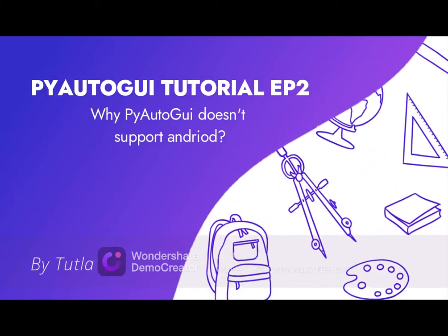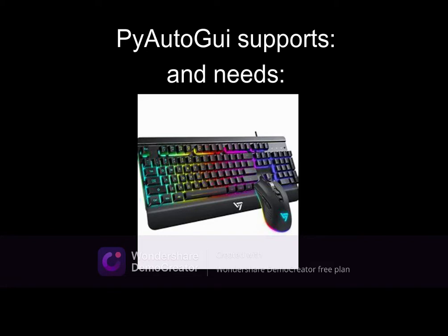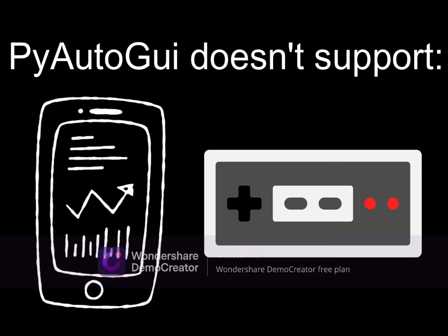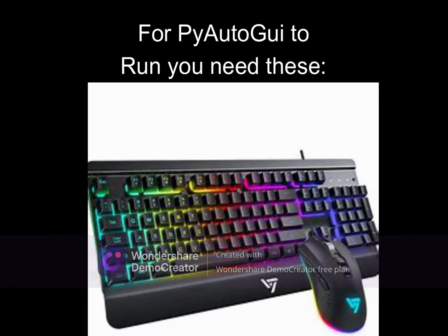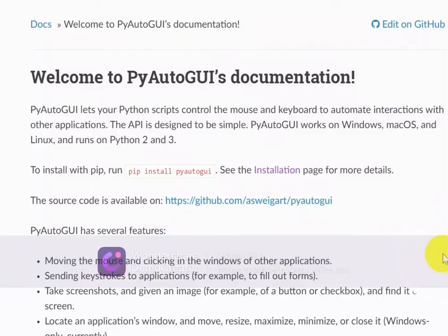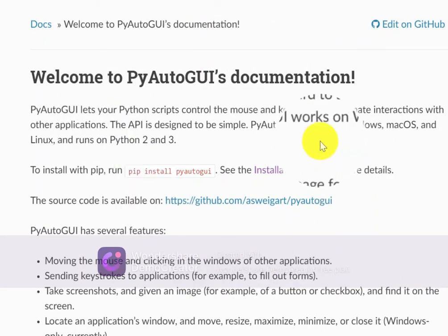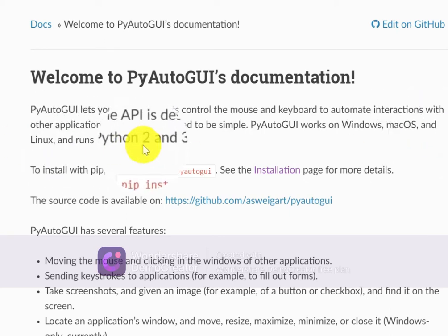Hello everybody, in this video I'm going to tell you why PyAutoGUI doesn't support Android and iOS mobiles. PyAutoGUI requires a keyboard and a mouse to run, and it doesn't support touchscreen or consoles. You obviously need these to run PyAutoGUI. PyAutoGUI works on Windows, Mac OS, and Linux, and runs on Python 2 and 3.